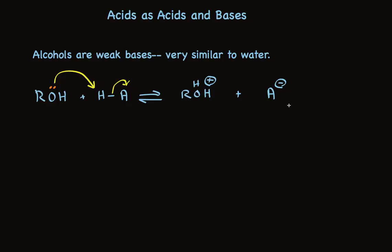As a result, we make a protonated alcohol, which is positively charged, and then also the counter ion, the anion, which is negatively charged. Again, this only happens if we're using very strong acids.